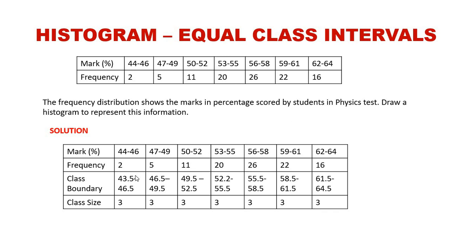The class boundaries bind the intervals. For 44 to 46, the class boundary is 43.5 to 46.5. From 47 to 49 the boundary starts at 46.5 — you can see where the first class boundary stops is where the second one starts — and it continues to the end.